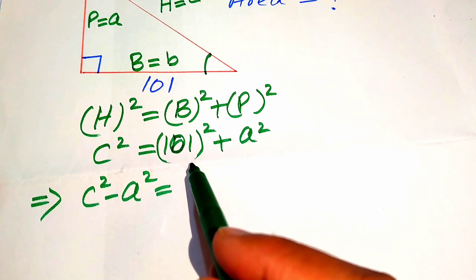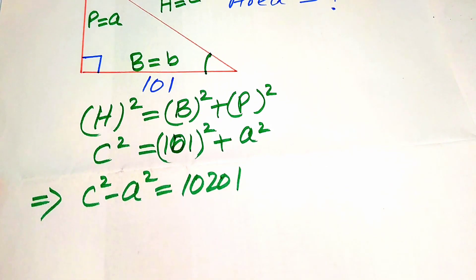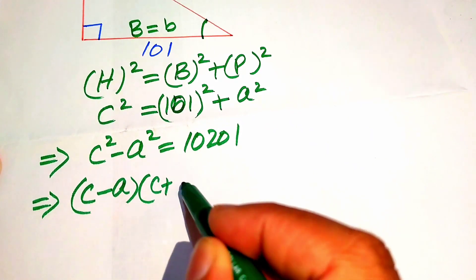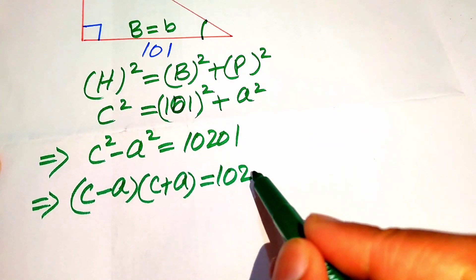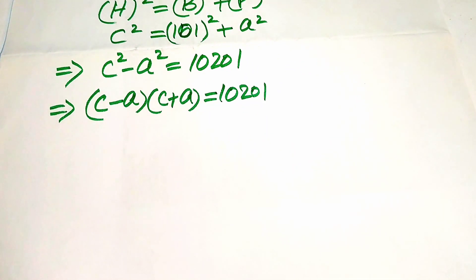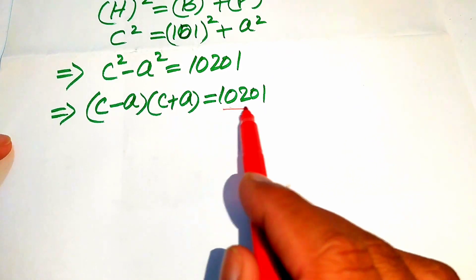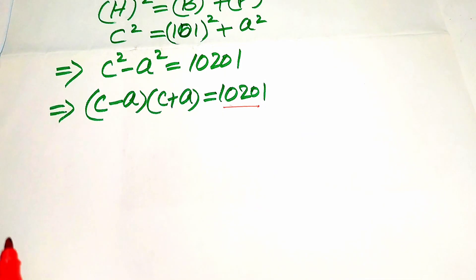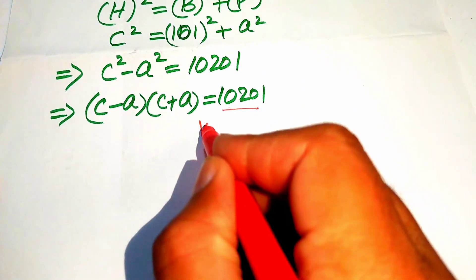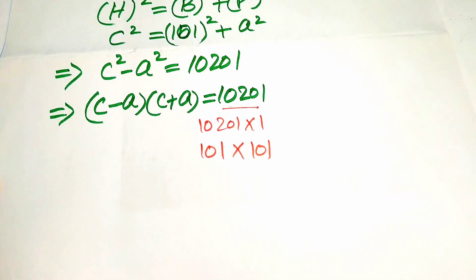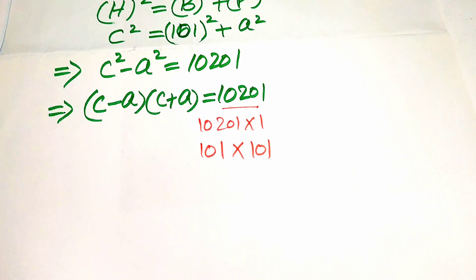We move a squared to the left-hand side and it becomes c squared minus a squared equals 101 squared, which is 10201. Here we use the difference of squares formula, and we know that c squared minus a squared equals c minus a times c plus a, so that equals 10201. Now we find the factors of this number. We have two possibilities: 10201 multiplied by 1 equals 10201, and the second case is 101 multiplied by 101 also equals 10201.